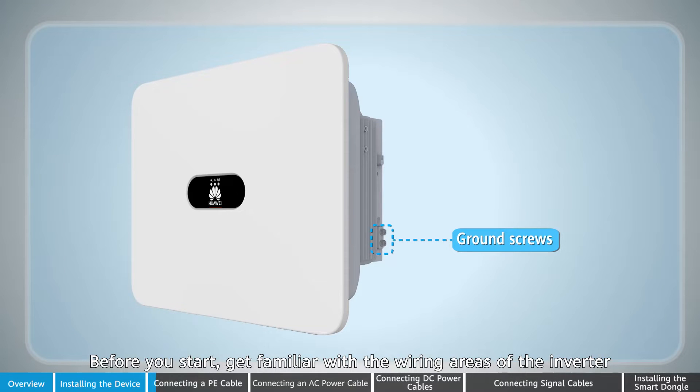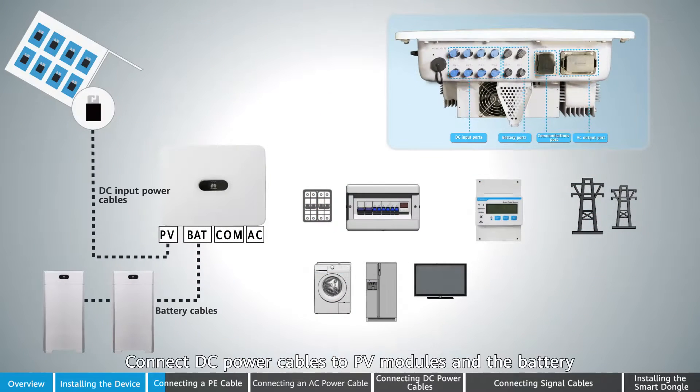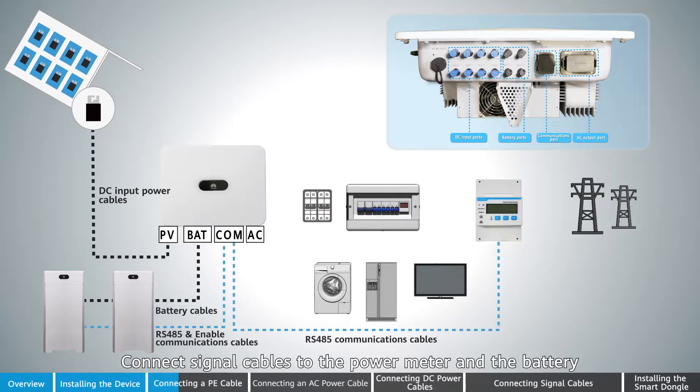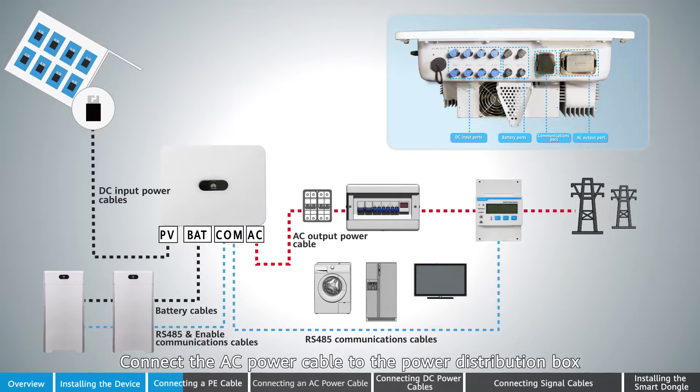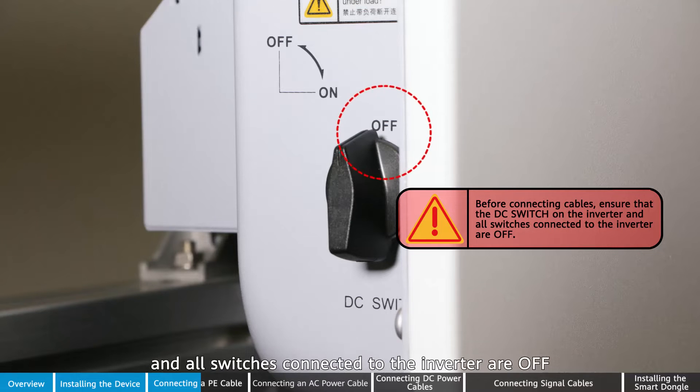Before you start, get familiar with the wiring areas of the inverter. Let's start from the inverter. Connect DC power cables to PV modules and the battery. Connect signal cables to the power meter and the battery. Connect the AC power cable to the power distribution box. Before connecting cables, ensure that the DC switch on the inverter and all switches connected to the inverter are off.